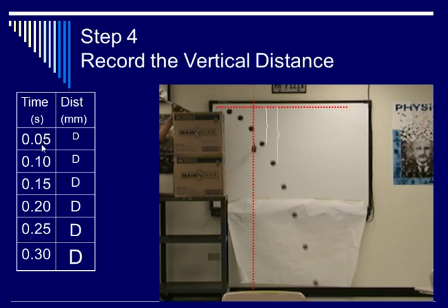Then you measure the vertical in the exact same way. Again, make sure you measure it to the same point every single time. And again, the time between successive frames is .05 seconds.